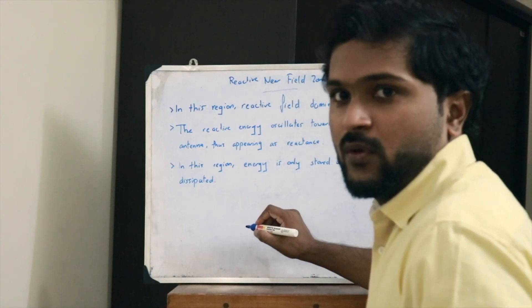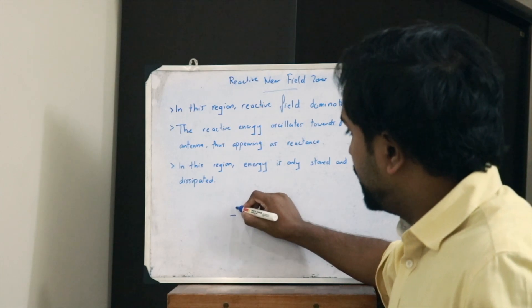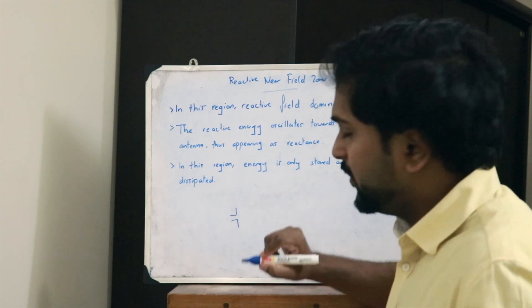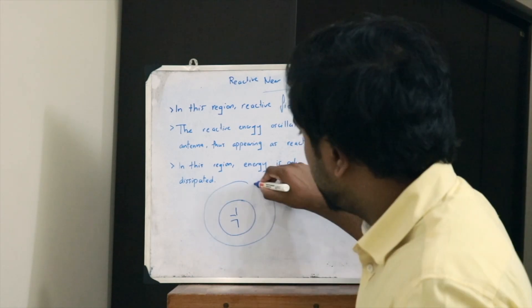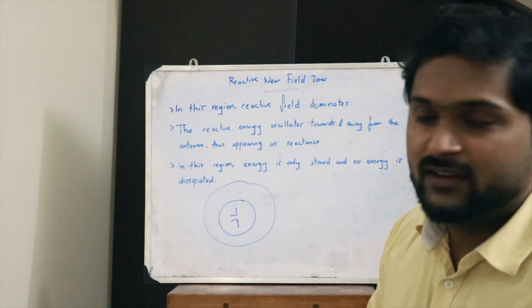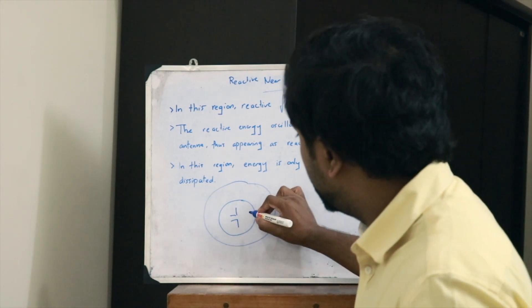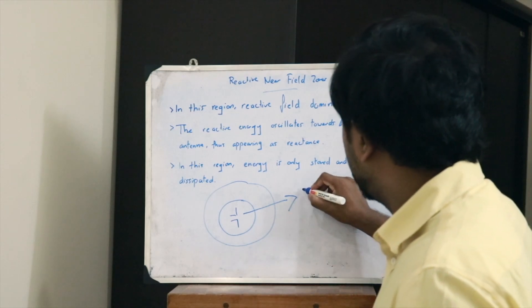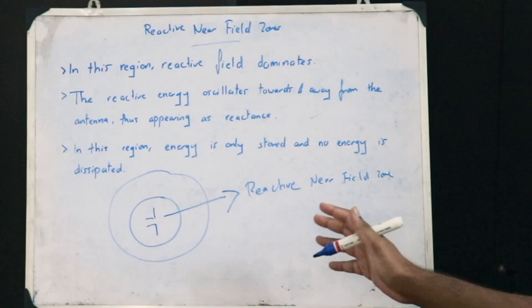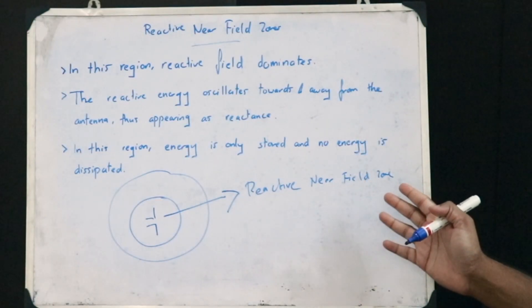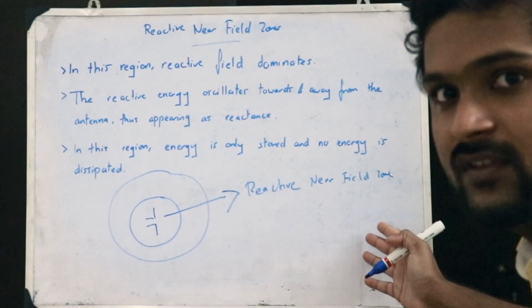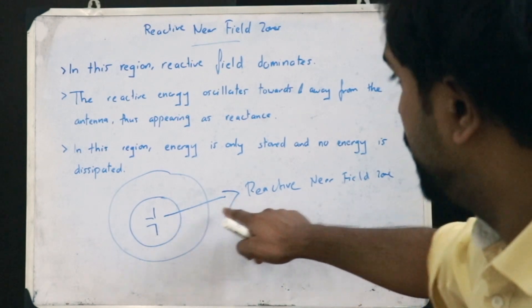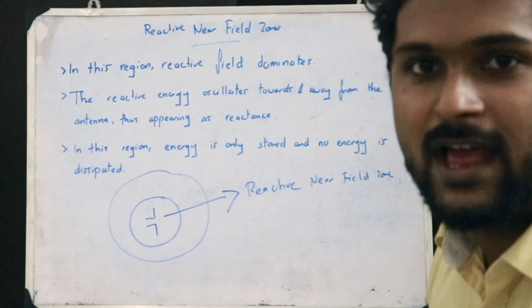So if this is a particular dipole antenna, then if these are the antenna field zones, then this particular zone is the reactive near field zone. This is the reactive near field zone of a particular dipole antenna.